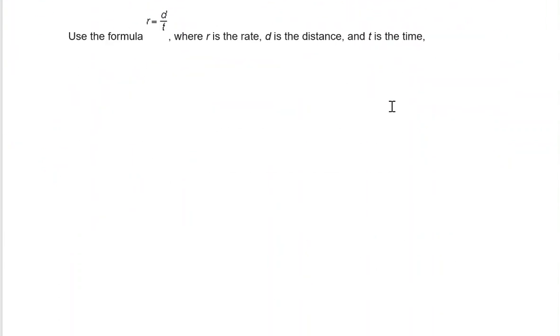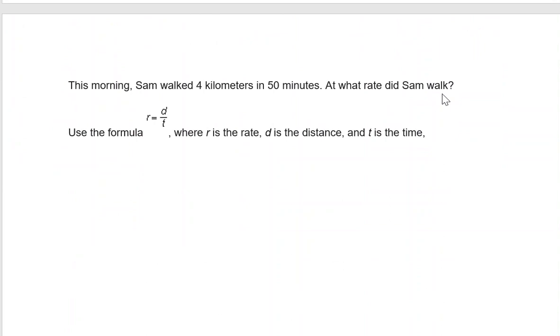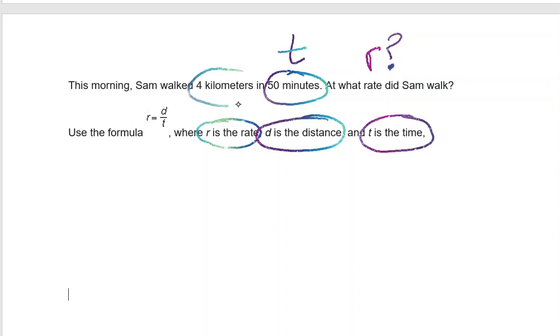One more example. In the last example here, we have Sam walked 4 kilometers in 50 minutes. At what rate did Sam walk? So R is the rate, D is the distance, and T is the time. The rate is what we do not know. 50 minutes is the time, 4 kilometers is the distance. So we can use the formula that they gave us: R is equal to distance divided by time. We can substitute 4 for the distance and 50 for the time.